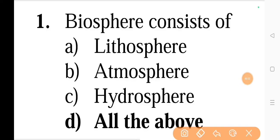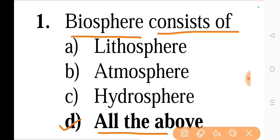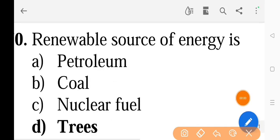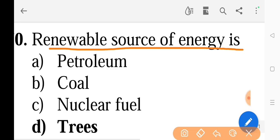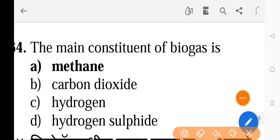First question: Biosphere consists of — the correct answer is option D, all of the above. Next question: Renewable source of energy is — the correct answer is option D, trees. Next question: The main constituent of biogas is — the correct answer is option A, methane.